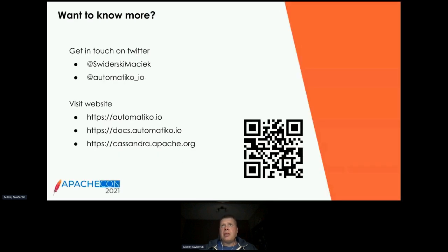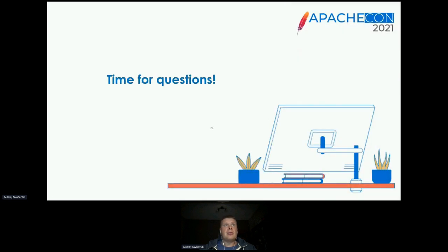Despite certain pain points, the advantages of using Apache Cassandra as a data store for workflows significantly outweigh them, with mitigations readily available. If you want to automate at scale, Apache Cassandra is the best candidate. You can get in touch on Twitter and find links to read more about the Automatico project and workflows powered by Cassandra, including a QR code to the Automatico landing page.